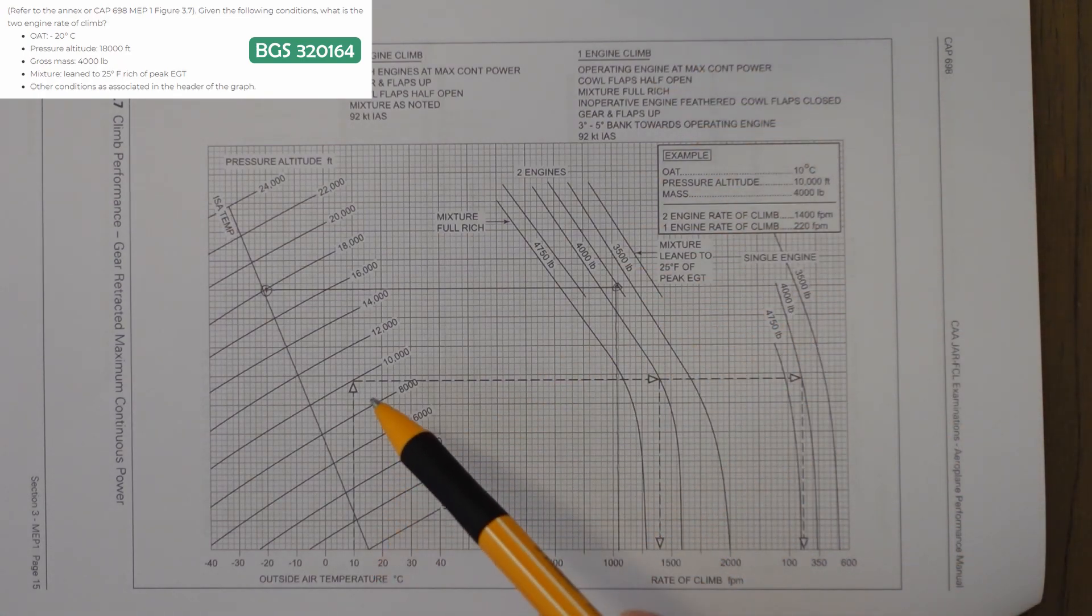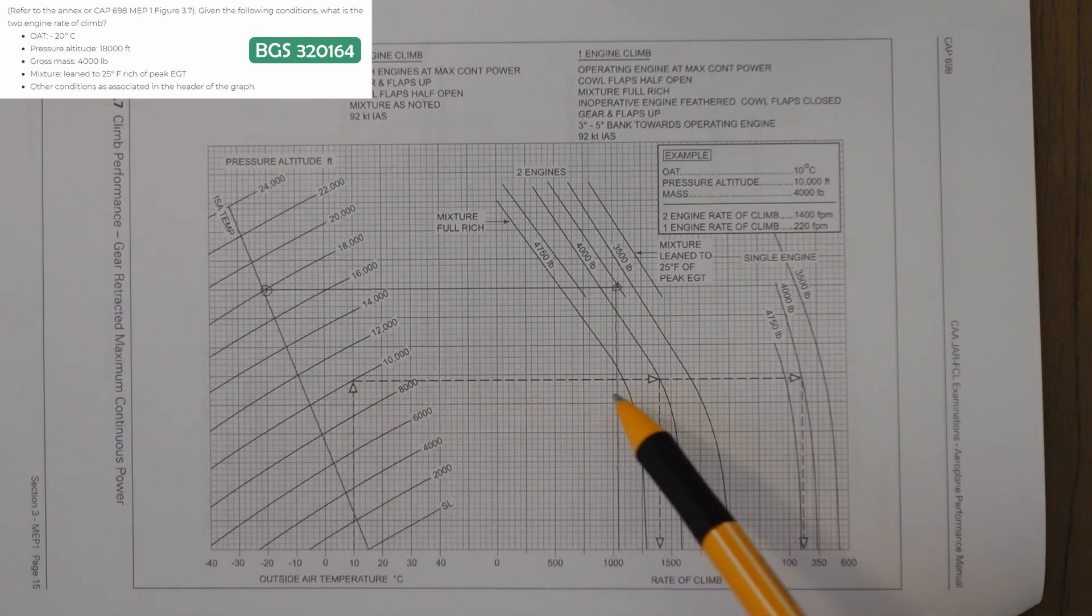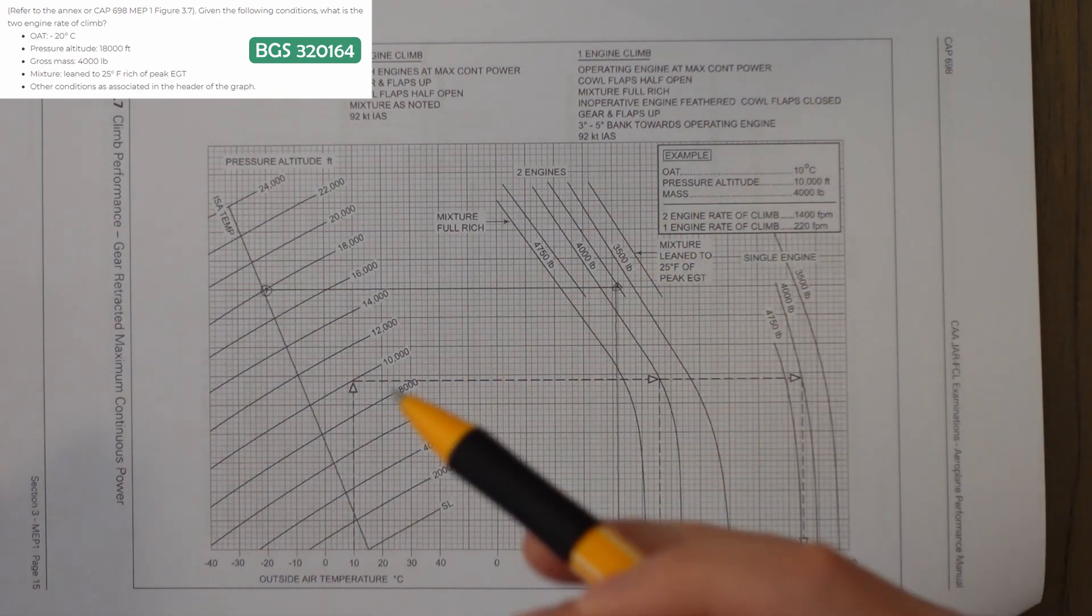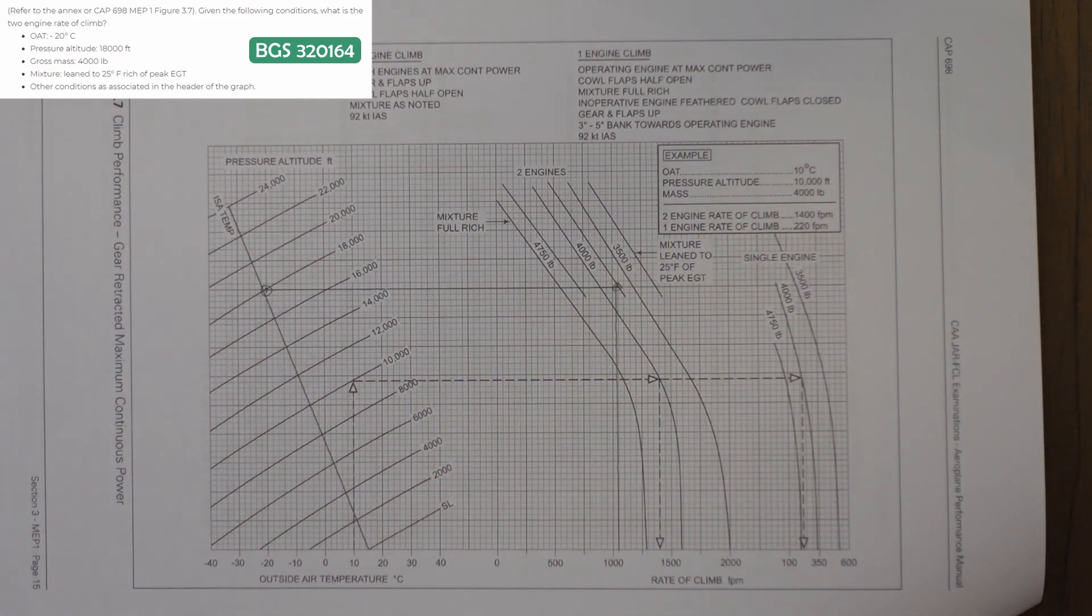This isn't a graph you would probably use that often, but just as I did in the very first example, I'd look at the example question, see that we go up, across. We hit the line we want to, we go down. And single engine is on this line. It's a very simple graph. Not all questions involve factors and tricks. This is just a pop the numbers in, find an answer.